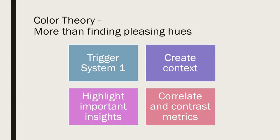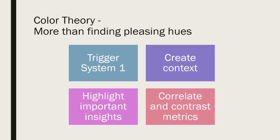A little bit about color theory — it's more than just finding something pleasing to the eye. The truth is that color is very dependent on personal experiences, culture, and biases to be universally translated to specific feelings. But there are some cultural and contextual links we can take advantage of, and some best practices we can employ. Color engages system one, makes different objects jump out to you, helps create context for your data, makes it more meaningful to your audience, helps highlight important insights, and allows you to correlate and contrast disparate metrics.